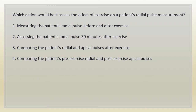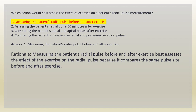Which action would best assess the effect of exercise on a patient's radial pulse measurement? 1. Measuring the patient's radial pulse before and after exercise. 2. Assessing the patient's radial pulse 30 minutes after exercise. 3. Comparing the patient's radial and apical pulses after exercise. 4. Comparing the patient's pre-exercise radial and post-exercise apical pulses. Answer: 1. Rationale: measuring the patient's radial pulse before and after exercise best assesses the effect because it compares the same pulse site before and after exercise.